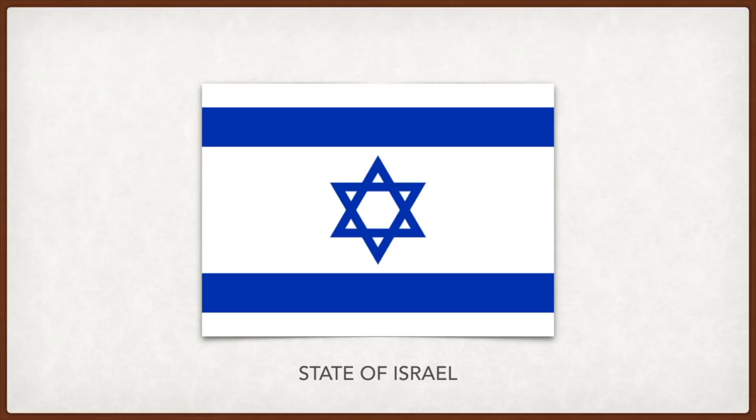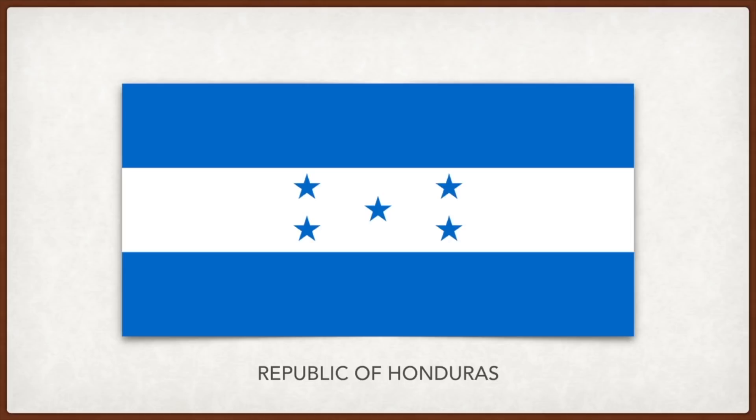Honduras: the five stars in the center represent the five original Central American provinces that once formed the Federal Republic of Central America — El Salvador, Costa Rica, Nicaragua, Honduras, and Guatemala — and the hope that they may form a union once again.